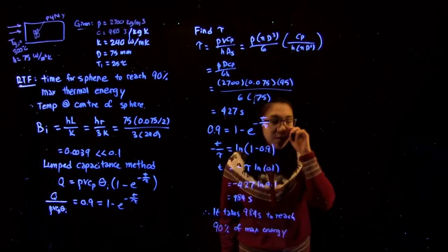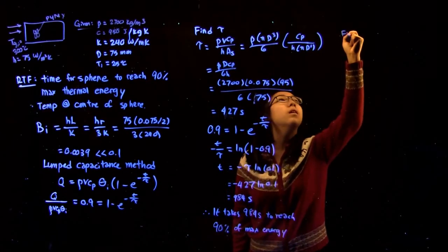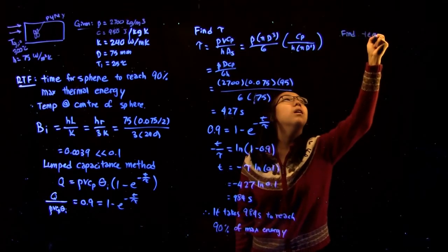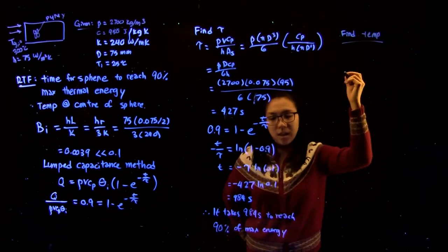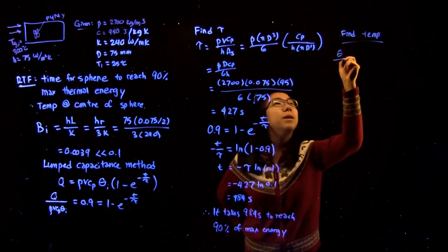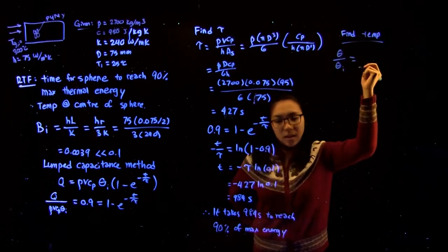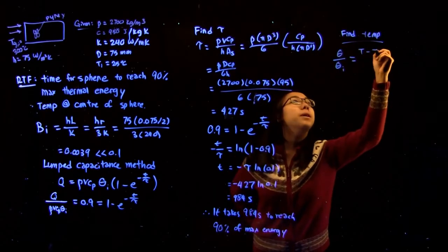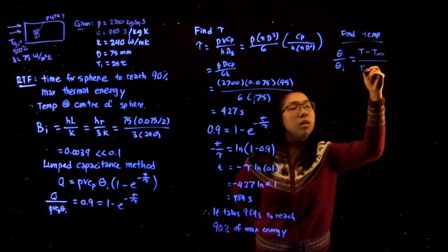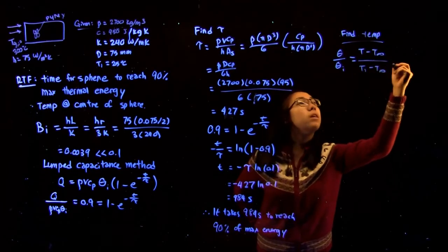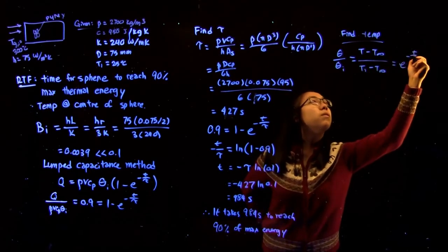The next thing we want to do is find the temperature. For the lumped capacitance method, the following equation applies: theta over theta_i equals e to the minus T over tau.